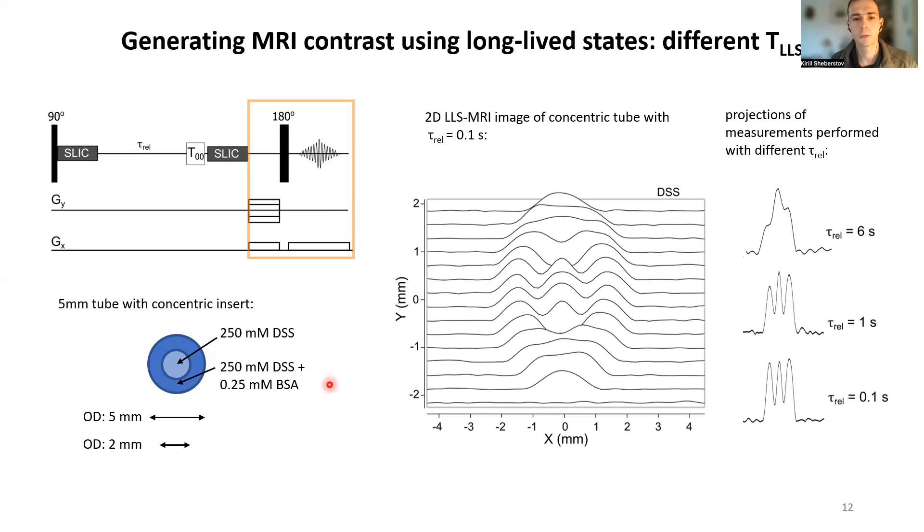But here we show an image of this experiment, just normal with a very short relaxation time, so you have both compartments. But if you increase this relaxation period, the outer compartment would relax faster. These are actually cross sections.